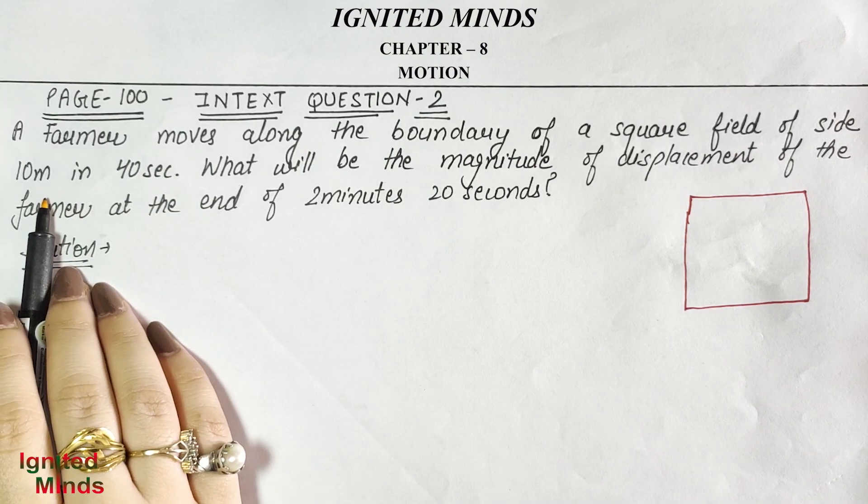The signal travels at the speed of light, which is 3 × 10⁸ meters per second. By class 9, students should know what 10 raised to the power 8 means. We need distance, and we have speed and time. Note that time must be in seconds, so we convert: 1 minute = 60 seconds, so 5 minutes = 300 seconds.